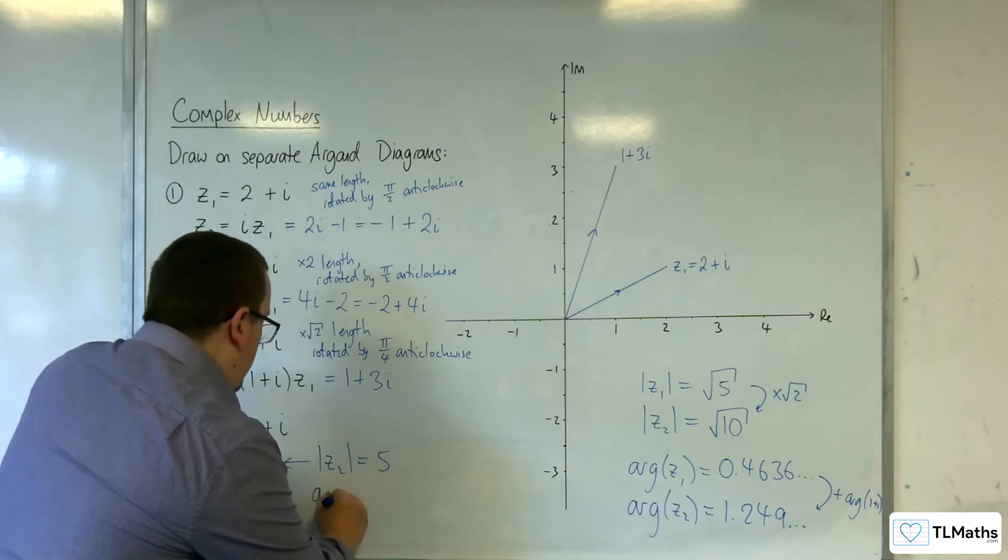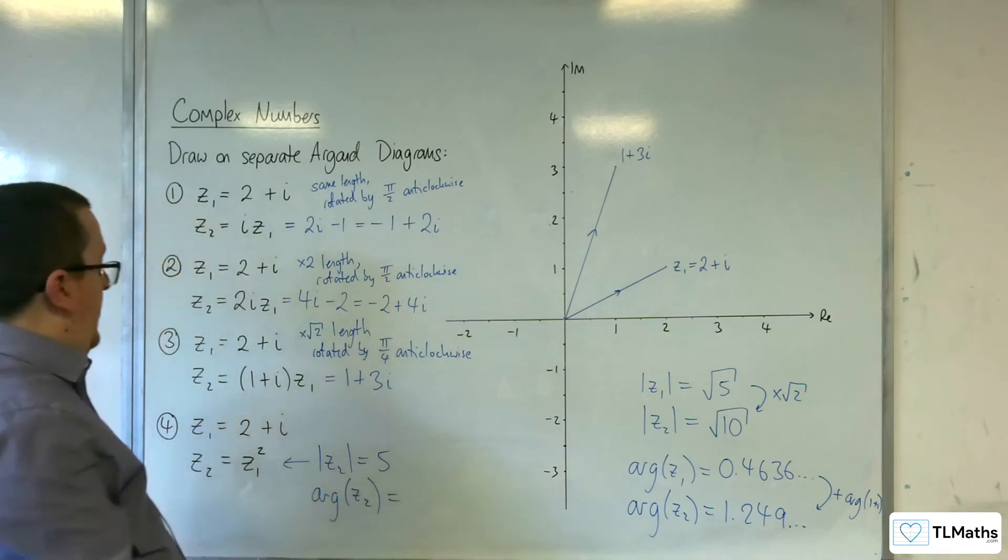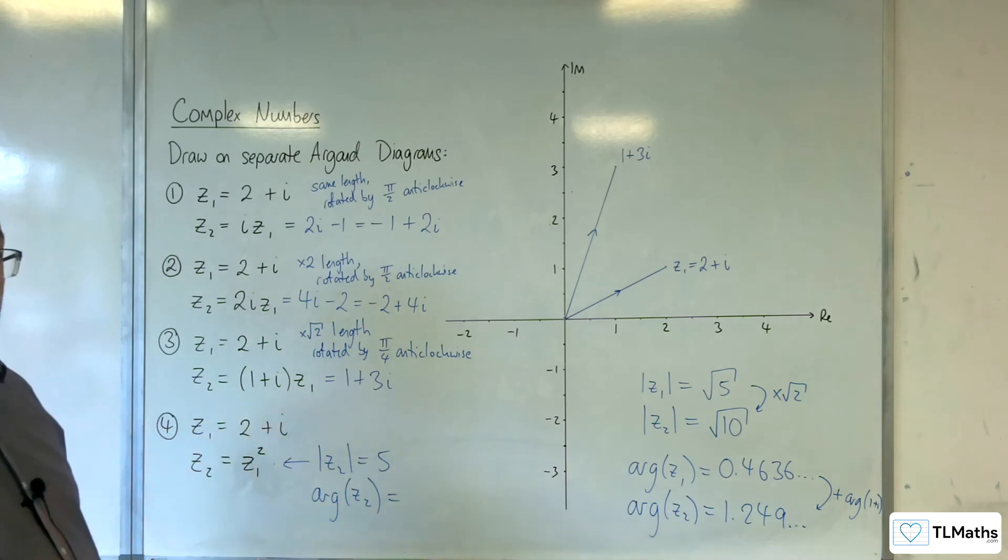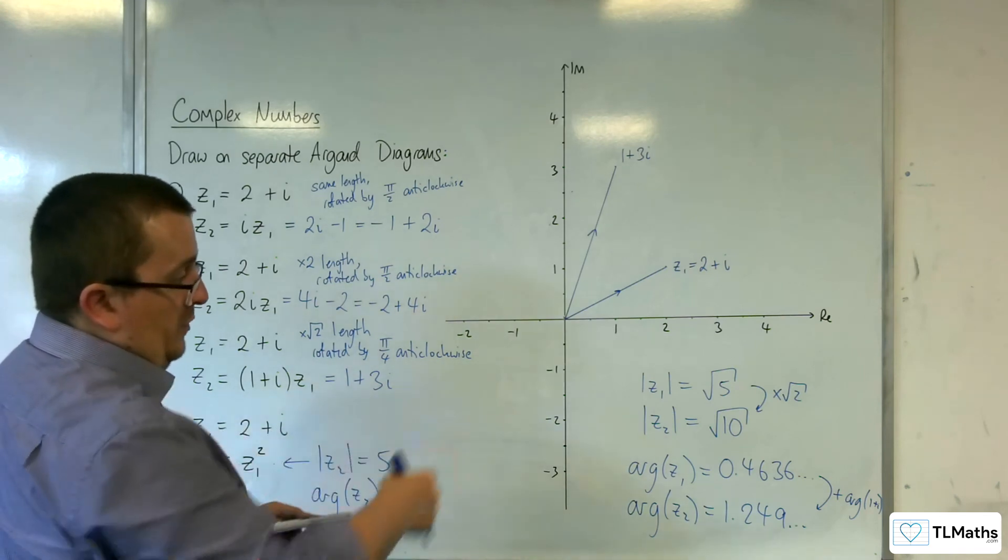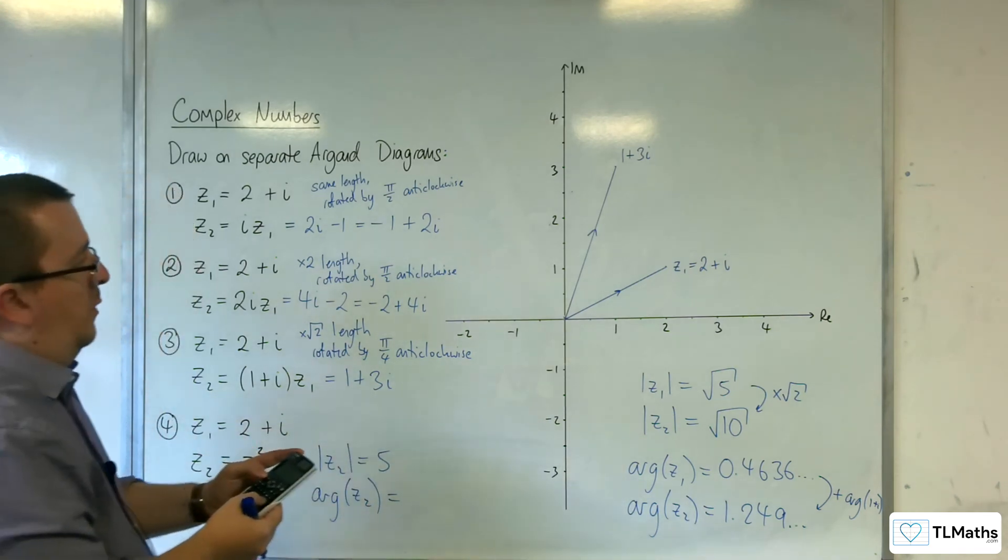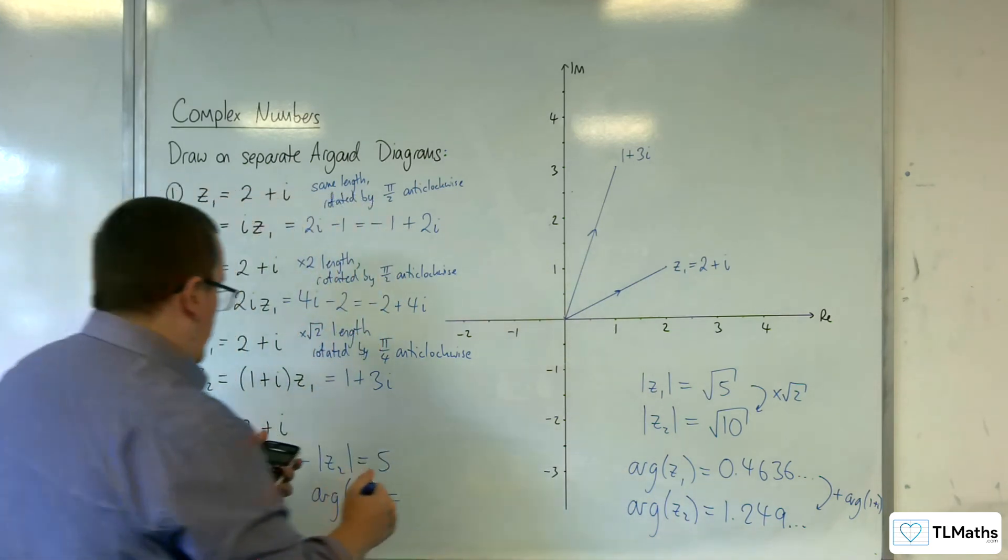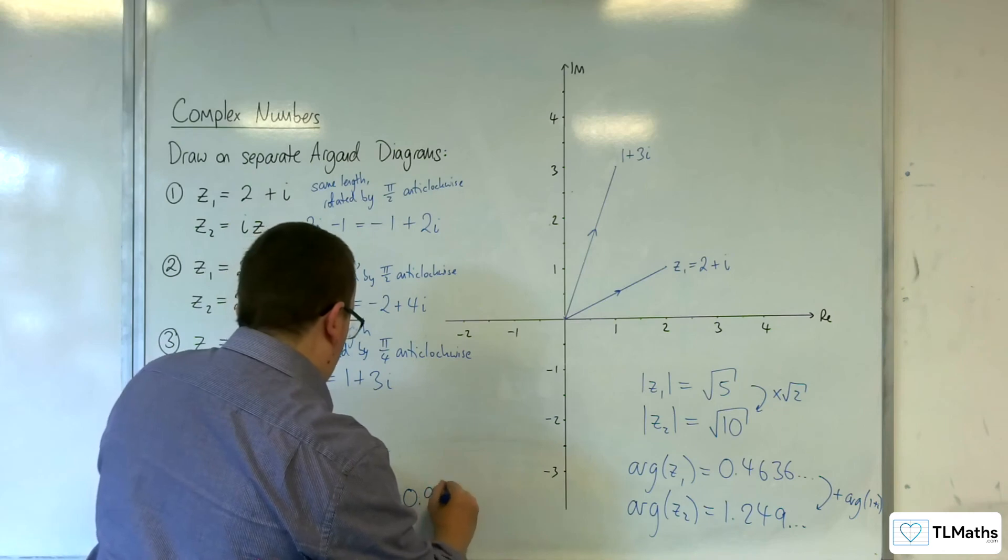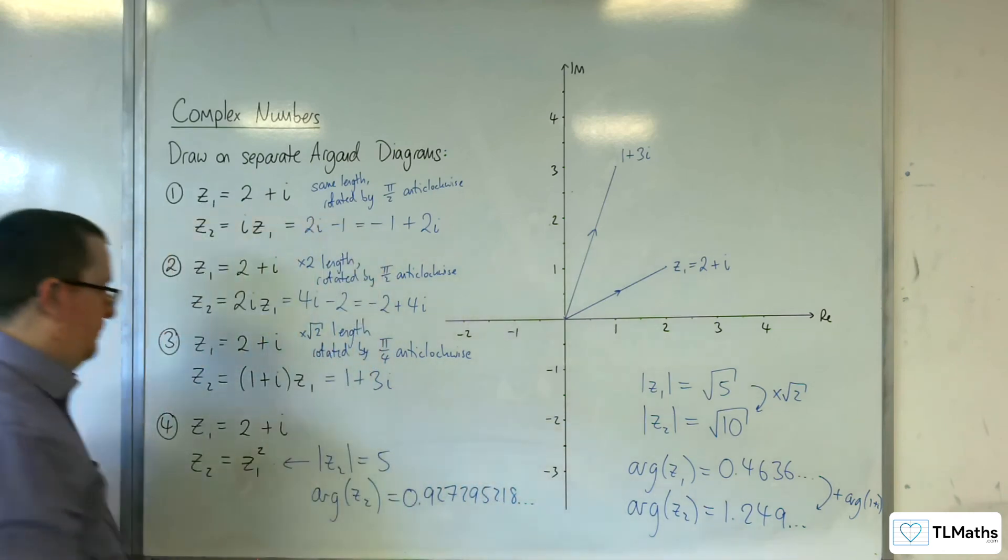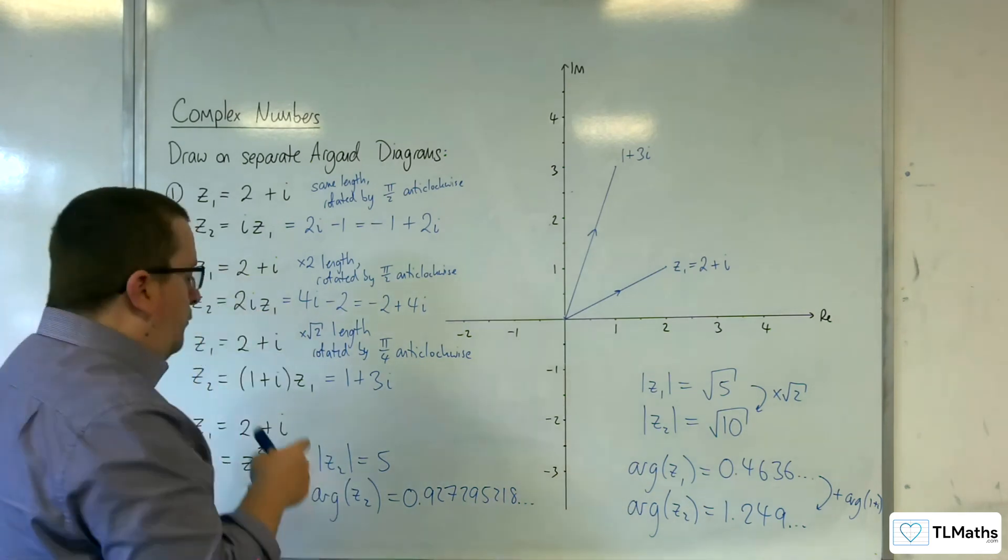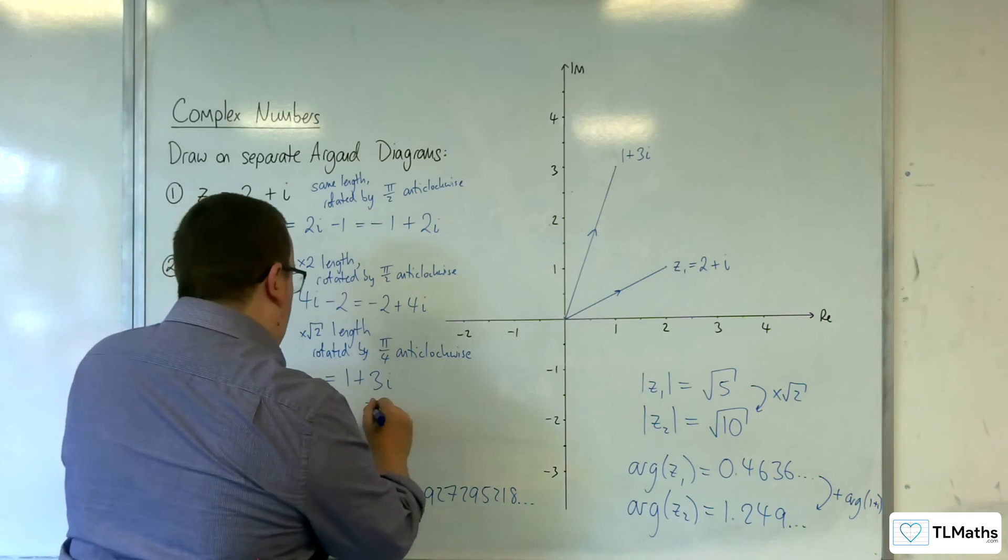And we reckon that the argument of z₂ would be the argument of z₁ plus the argument of z₁. So that's double the 0.4636, inverse tan of 1 over 2, double that. So 0.927295218. If we write this in modulus argument form, this is what we think z₂ is going to be. 5 lots of cosine of 0.927, etc., plus i sine of 0.927, etc.